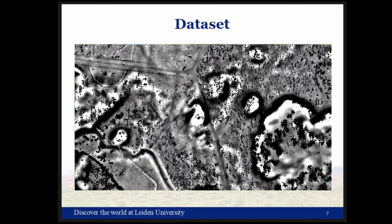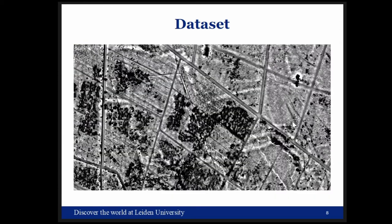Some archaeology found had previously only been very sporadically documented, such as these charcoal kilns, which were later incorporated into the dataset. Some chance finds were also made, such as a potential Roman marching camp next to two new barrows. These new barrows have recently been confirmed by corings by Quentin Bourgeois and myself, and the Roman marching camp will be investigated later this year.